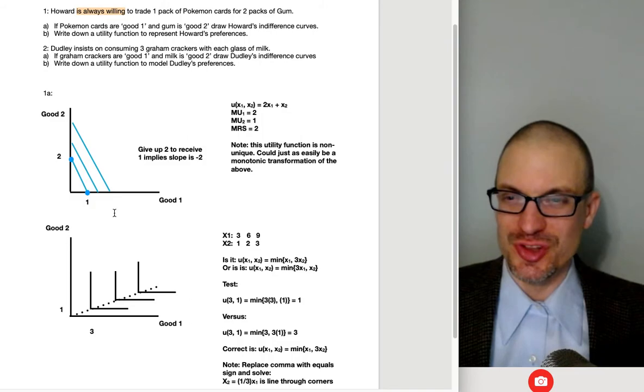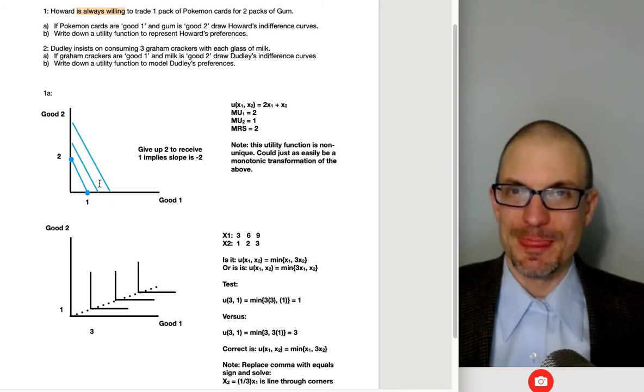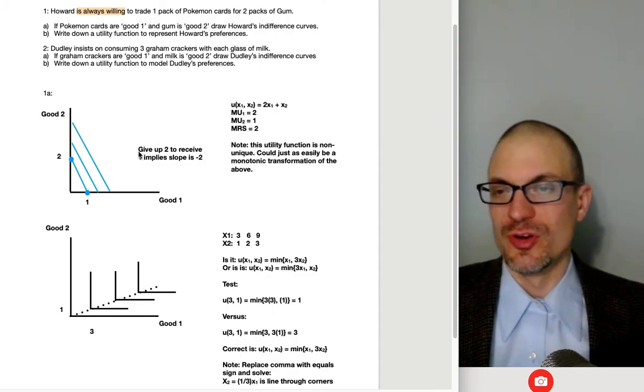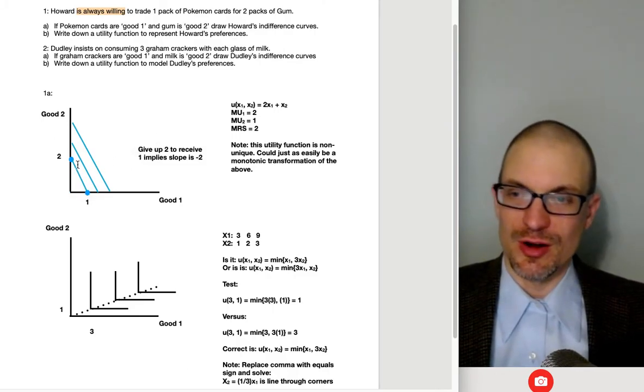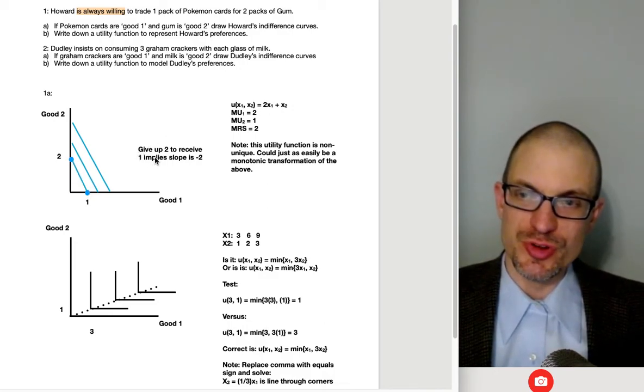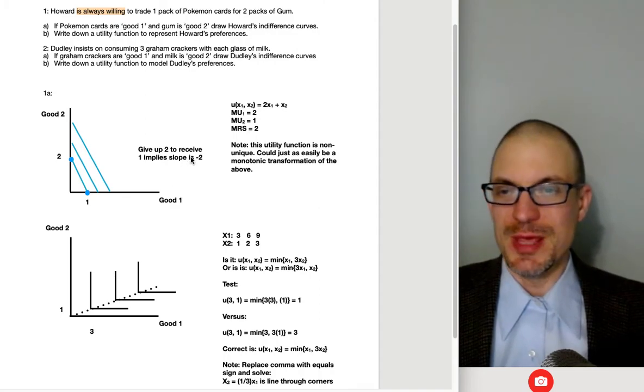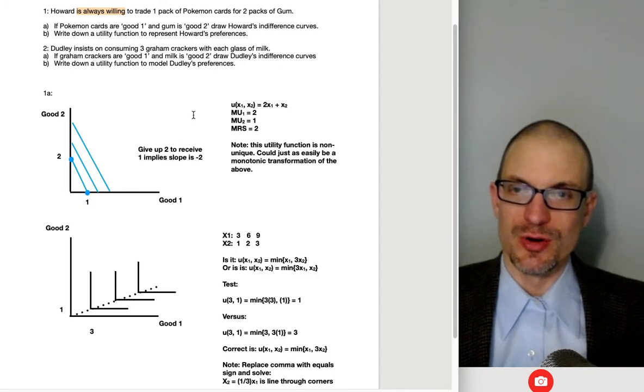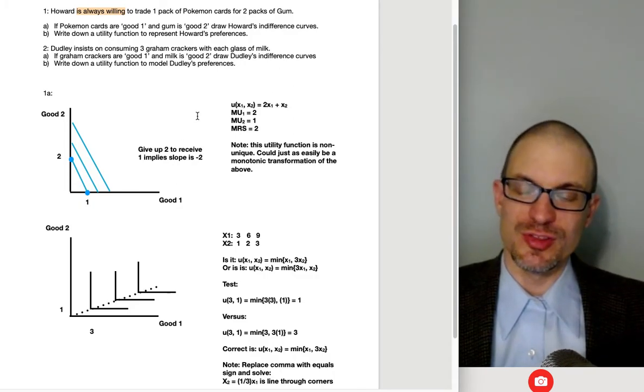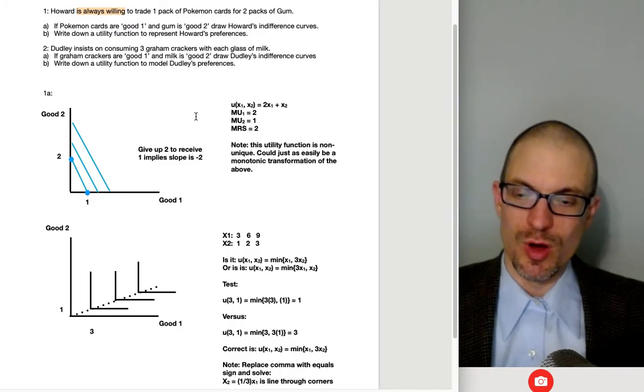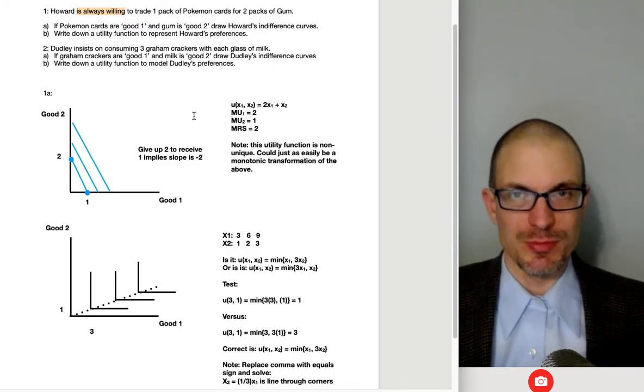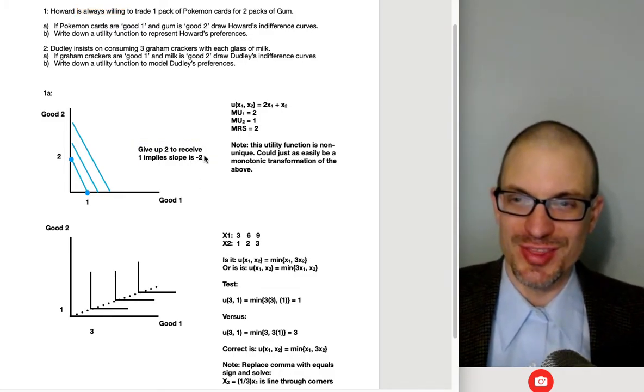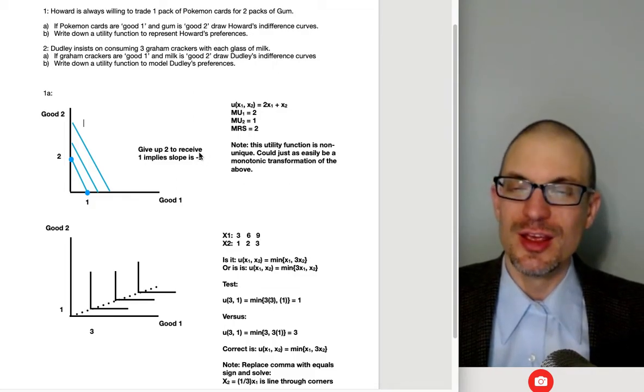All right. So once we've got our slope here, now we've got to figure out exactly what's going to be the utility function that's going to correspond to these preferences. So I'm thinking carefully about what's going on here. This is telling me I'm giving up two to receive one implies the slope is minus two. To be able to get indifference curves with a slope of minus two, right, we want to think about, well, perfect substitutes preferences, the marginal utility of good one divided by the marginal utility of good two has to be two in this case. Oh, yeah. So the sign. So remember the note from Varian that says, like, let's not worry too much about the negative sign.